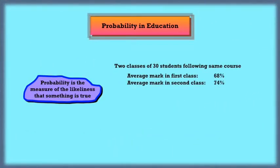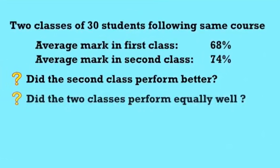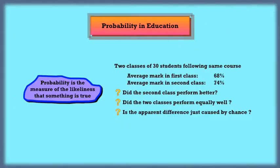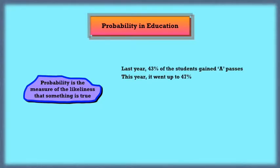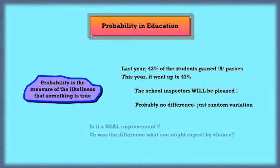We looked at this example, the two classes with different average marks. The question was, are they really real differences, or is it just caused by chance? Now looking at this with the numbers of only 30 in each class, the probability in fact is it's just caused by chance. Statistics will help us. It's almost certainly just random variation.